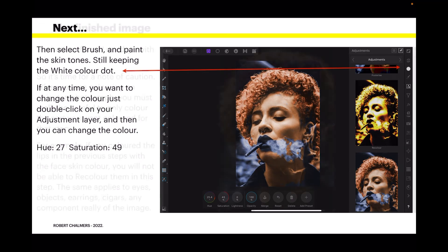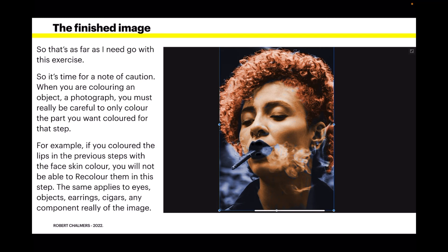That's as far as I need to go with this exercise. It's time for a note of caution: when coloring an object or photograph, you must be careful to only color the part you want colored for that step. For example, if you colored the lips in the previous steps with the face skin color, you will not be able to recolor them in this step — the same applies to eyes, earrings, cigars, any component of the image. Remember that one step where you inverted things: that's because the whole image changed to the color, and you inverted it to get rid of it, then painted in white to bring back just the bit you want. That's the secret.